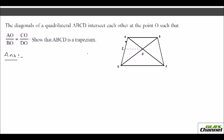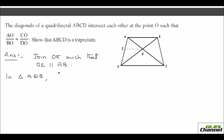Here is how to approach it. Draw trapezium ABCD with diagonals AC and BD intersecting at O. As a construction, join point E on AD such that OE is parallel to AB. Now in triangle ADB, since OE is parallel to AB, by BPT we get AE over ED equals BO over OD. Take this as equation 1.